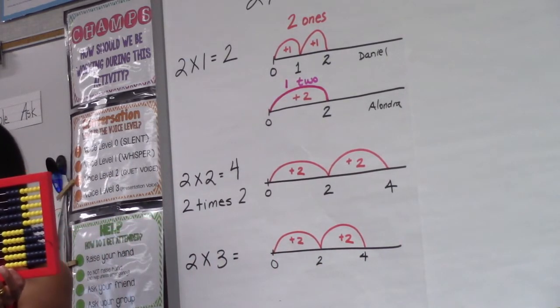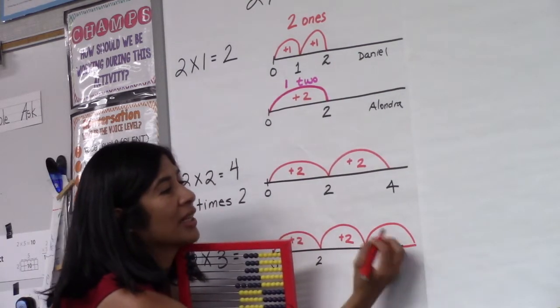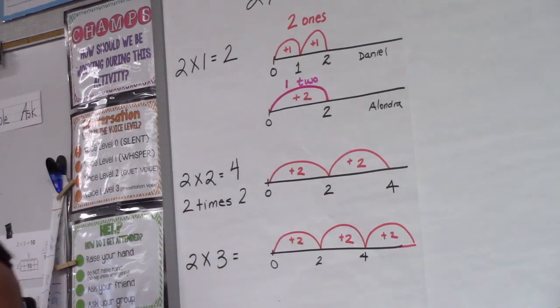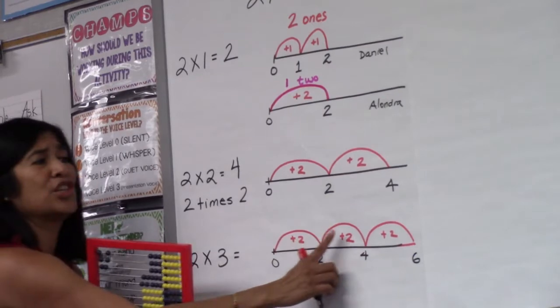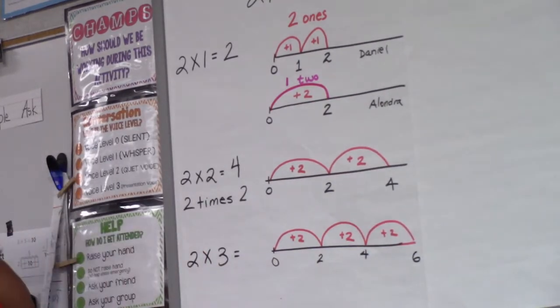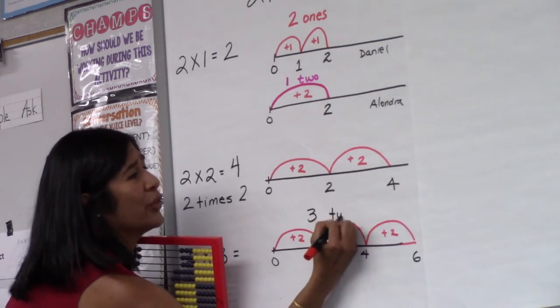And then what else did you do? I put two more on the bottom. Two. And how much is that class? All together. Six. How many times did she do two? Three. She did three twos. One, two, three.